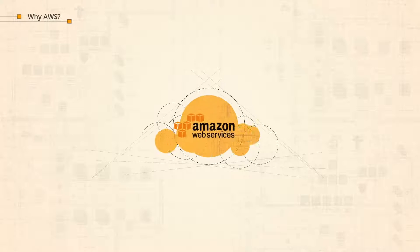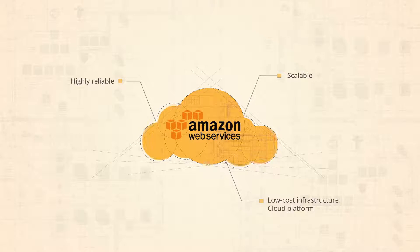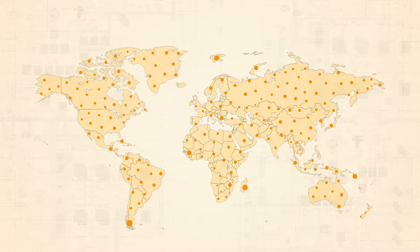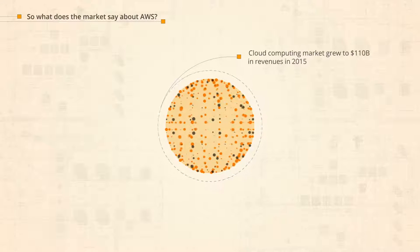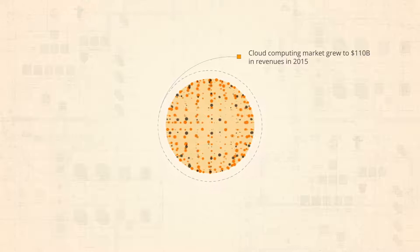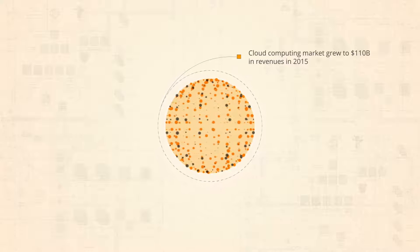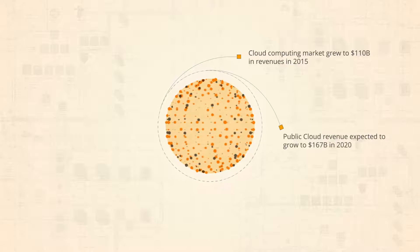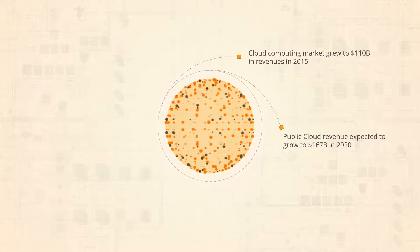Amazon Web Services provides a highly reliable, scalable, low-cost infrastructure platform in the cloud that powers hundreds of thousands of businesses in 190 countries around the world. The worldwide cloud computing market grew 28% in revenues in 2015, which is $110 billion US, and the public cloud revenue is expected to grow to $167 billion by 2020.